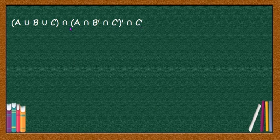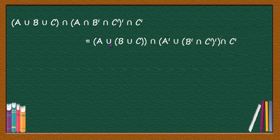To solve this problem, consider (A ∪ B ∪ C) ∩ (A ∩ B' ∩ C')'. You can apply De Morgan's theorem for these two terms — that is, (A ∩ B' ∩ C')' becomes (A' ∪ B'' ∪ C''), which simplifies using De Morgan's law.